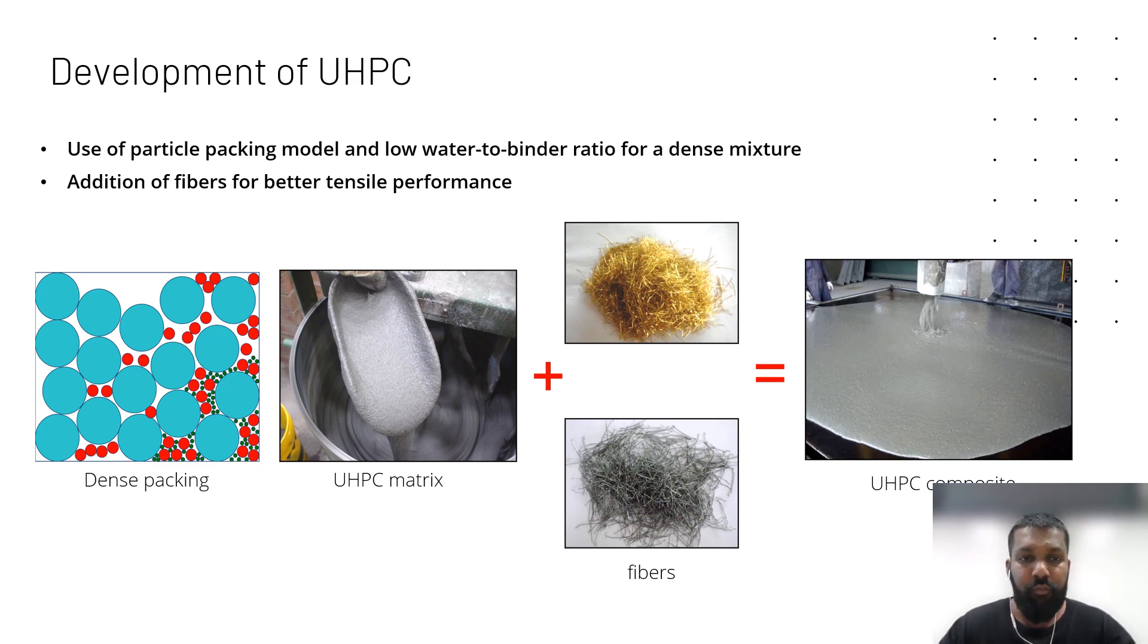We use silica fume which has particles in the range of micrometer diameters to fill the gaps between cement particles. Then we use a very low water to binder ratio in the range of 0.2 or even less than 0.2. We have to use superplasticizers to make UHPC flowable, as the water in itself is not enough for surface wetting.